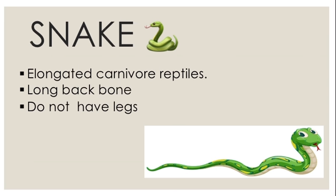Now let us talk about the snake. The snake does not have a vertebral column — that is, it does not have a backbone. That is why it is not able to sit or stand, so it can only crawl on the ground.